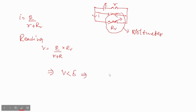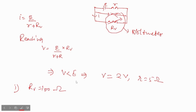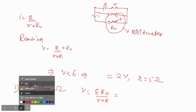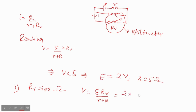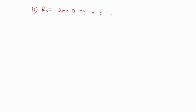Let's take random values: E equals 2 volts and small r equals 5 ohms. In the first situation, taking Rv equal to 100 ohms to measure the potential difference between two points, V equals E times Rv upon (small r plus Rv), which gives 2 times 100 upon 105, which is nearly 1.8 volts. In the second case, increasing Rv to 200 ohms gives approximately 1.97 volts.